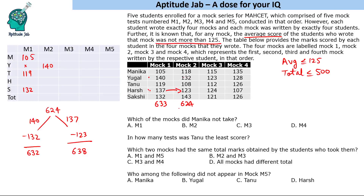Since the total must be ≤ 500, and only removing 143 brings the total under 500, Sakshi is the only person who could not write this test. So Sakshi will not appear for this mock and will appear for the remaining tests.